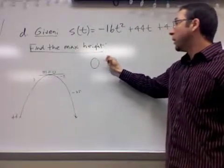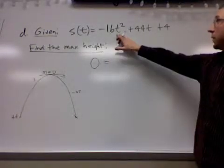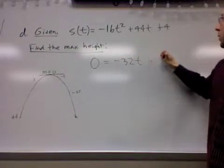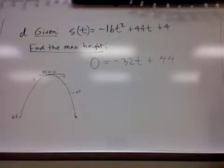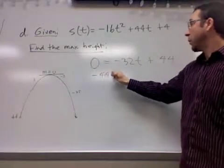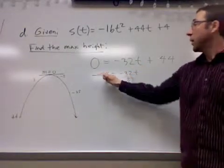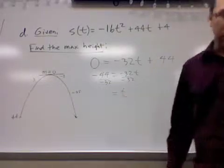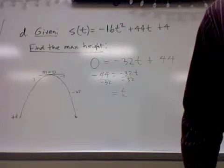So the question is find the maximum height. We use that trick to find the maximum height or a minimum height on a graph - you set the derivative equal to zero. So the derivative is negative 32t plus 44, and it just takes a few seconds to find the answer there. Subtract away 44 from both sides and divide by negative 32. There you have it - it'll take a little bit more than one second for it to hit its highest point.